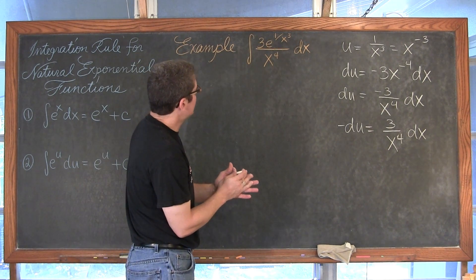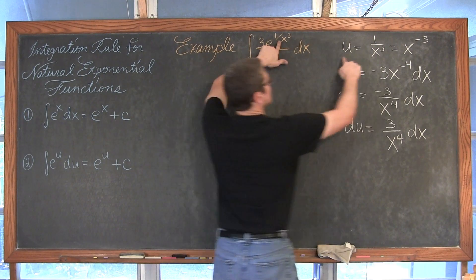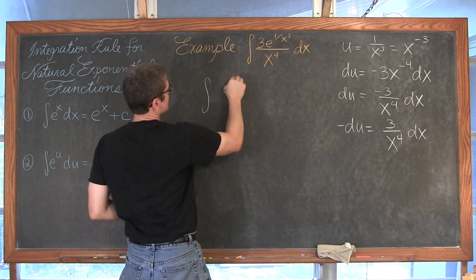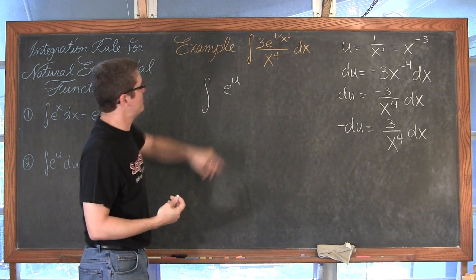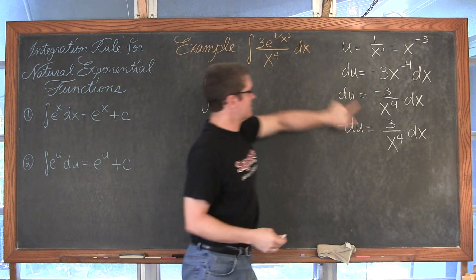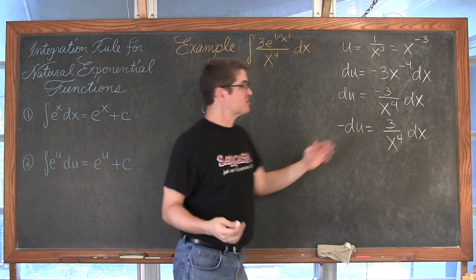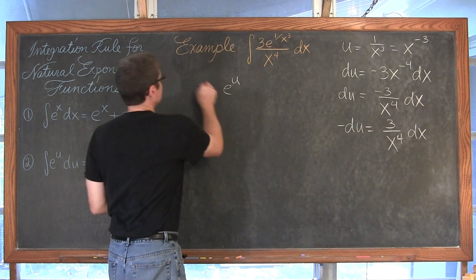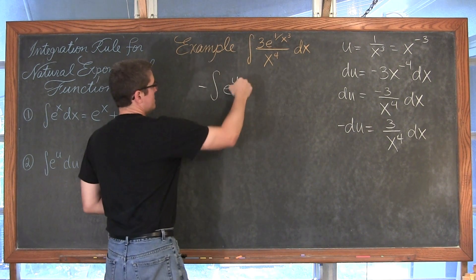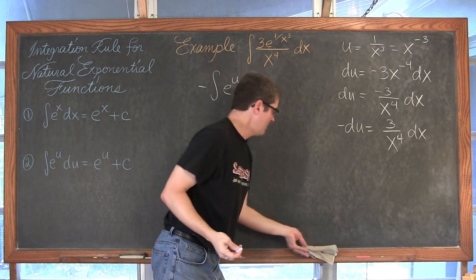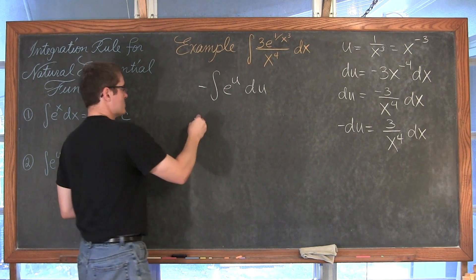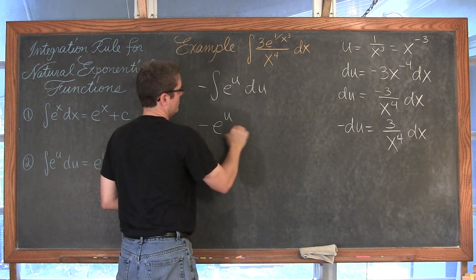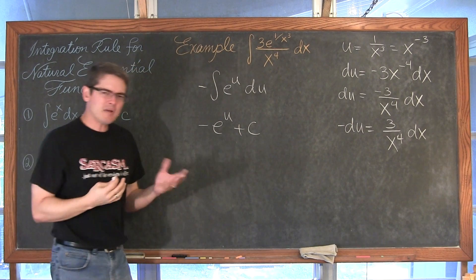So we have e to the u here. The indefinite integral of e to the u, and 3 over x to the fourth dx equals negative du. Bringing that negative out front, we have negative e to the u du. This works out just as easily as the last one. We get negative e to the u plus c.